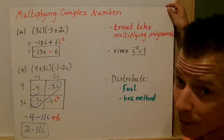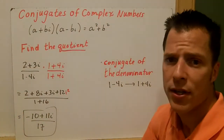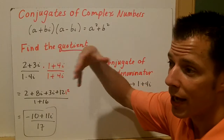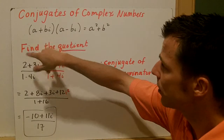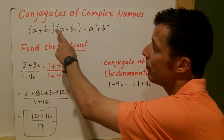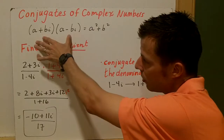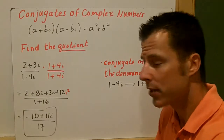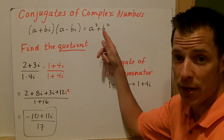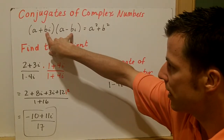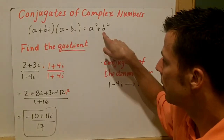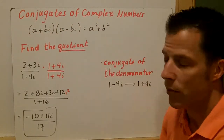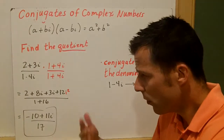When we find the quotient of complex numbers, you need to think of complex conjugates. Conjugates are just the opposite sign of the binomial — so if we have a plus bi, the conjugate would be a minus bi. They look exactly the same; the only difference is the sign. When you multiply complex conjugates, you get a squared plus b squared, because the middle terms cancel and you get negative bi squared, which equals b squared.